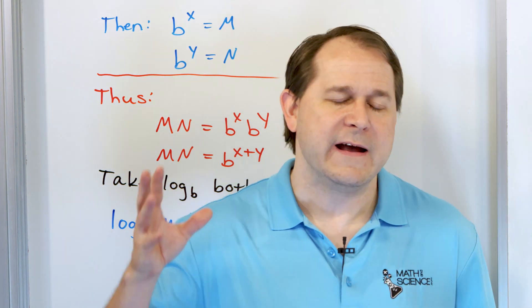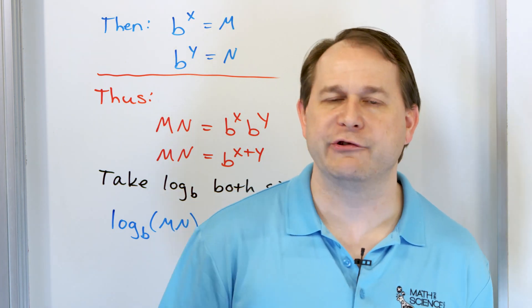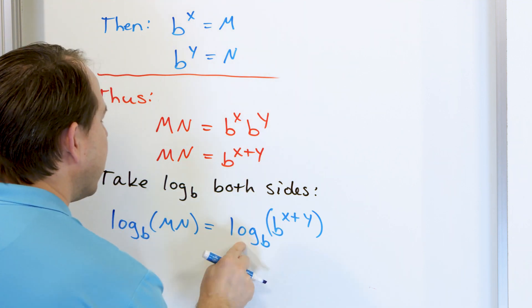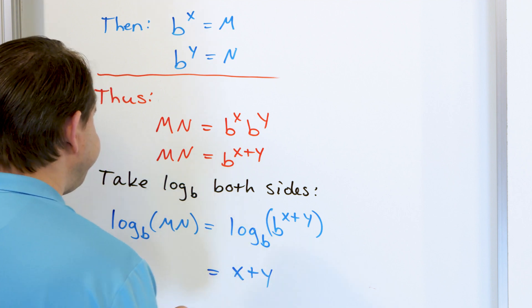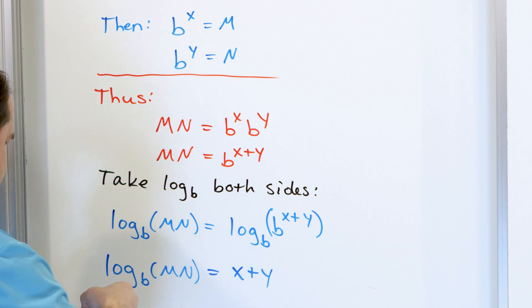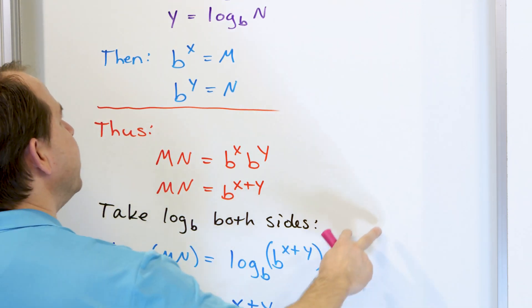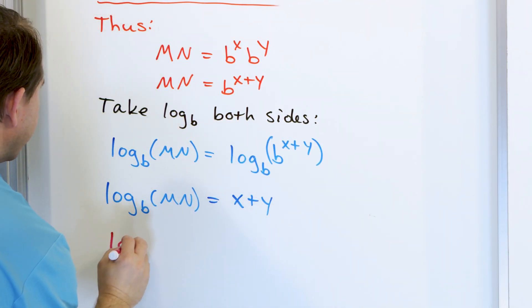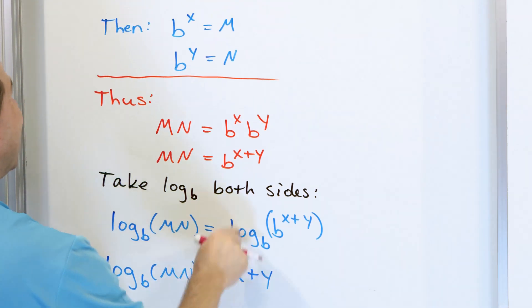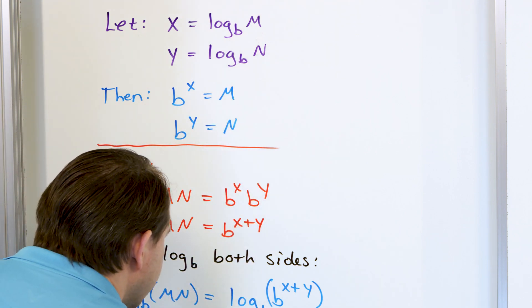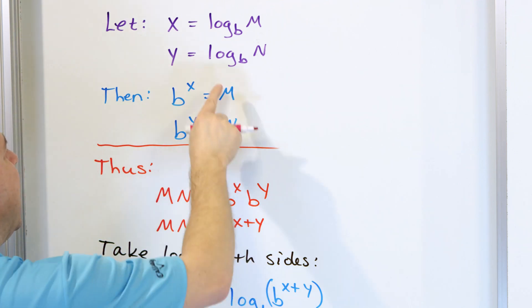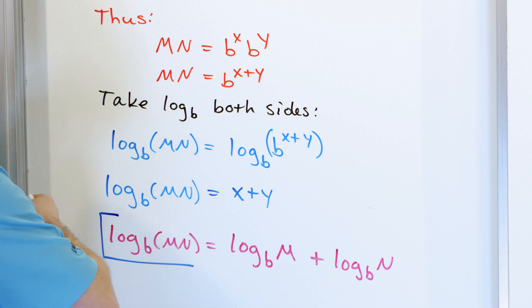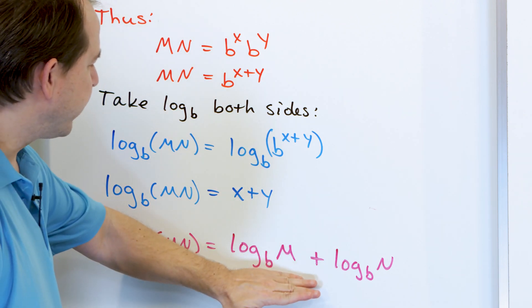The inverse function undoes what the other function did. So on the right-hand side, the logarithm cancels with the base b, and all I have left is x plus y. On the left-hand side, I have log base b of m times n equals x plus y. But I defined what x and y were: x is log base b of m, and y is log base b of n. So log base b of m times n equals log base b of m plus log base b of n — exactly what we set out to prove.